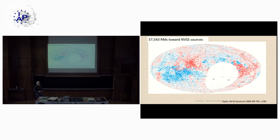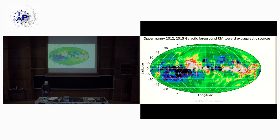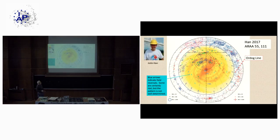Oppermann et al. smoothed those extragalactic Faraday rotation measures into a continuous map using different statistical approaches. Green is near zero, red is very positive, and blue is very negative rotation measure. Additionally, including pulsars — which are polarized and whose Faraday rotation we can measure — Jin-Lin Han has plotted the sun and galactic center, using pluses for positive and circles for negative rotation, at different scales.